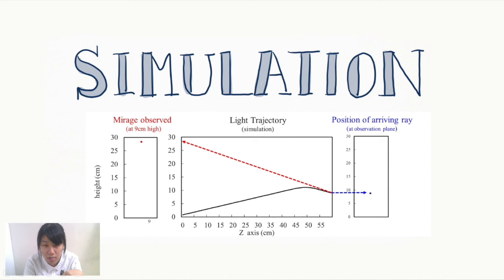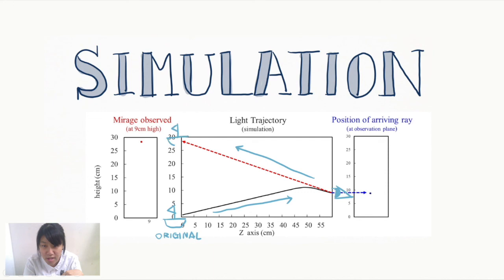We can also investigate Fata Morgana with a theoretical method. Using the simulation built by our theory, we can not only simulate the light's trajectories passing through the complex media, but also trace the light back in a straight-line manner just like how the human brain does, finally predicting what the mirage will look like in different observational positions.